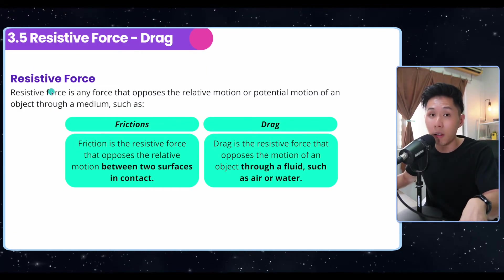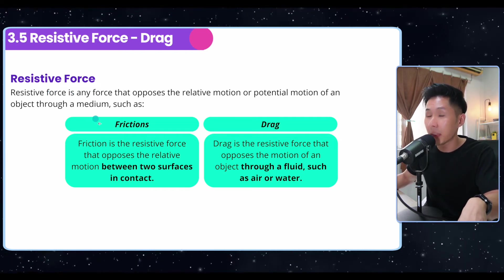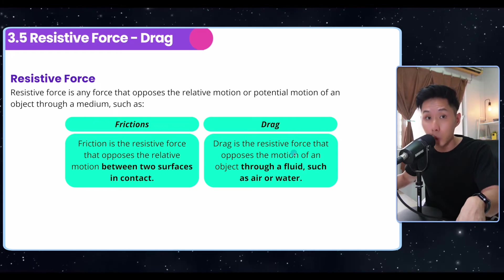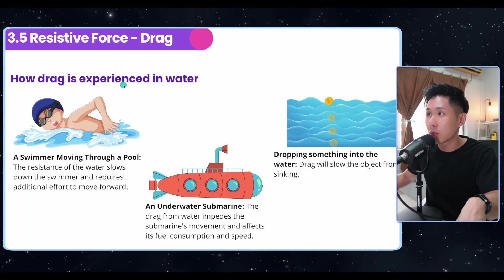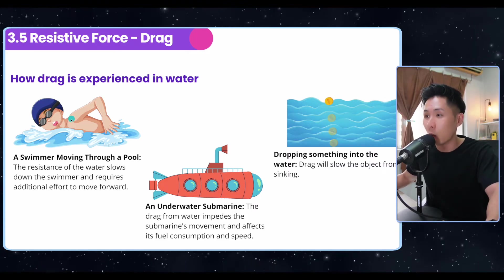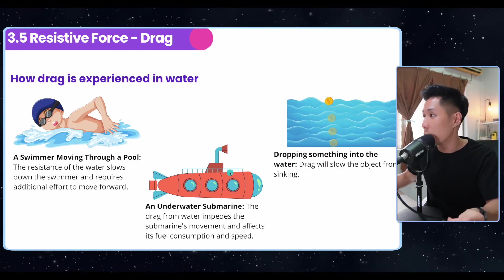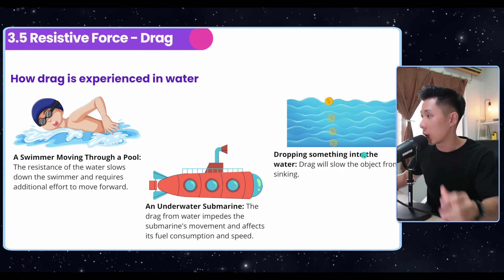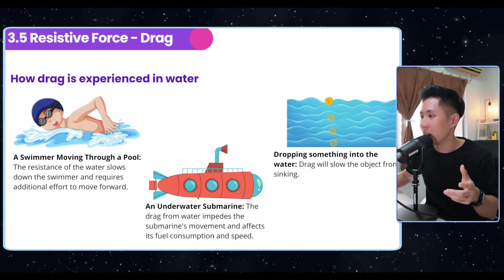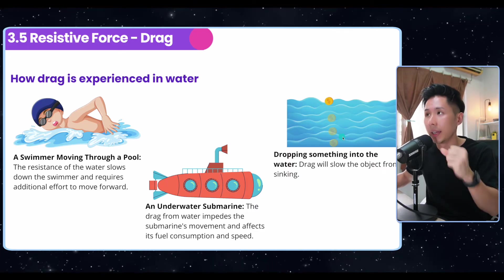Now we'll talk about resistive drag, resistive force. We have two types: friction, which we already talked about, and drag which is a resistive force that happens in a fluid like air and water. Let me explain how drag is experienced in water. As you swim across the swimming pool, you will feel the water slowing you down. An underwater submarine will also encounter drag in the water. If you drop something into water, drag will also slow the object from sinking. These are phenomena that happen frequently. I'm just trying to bring real life examples into what you learn.